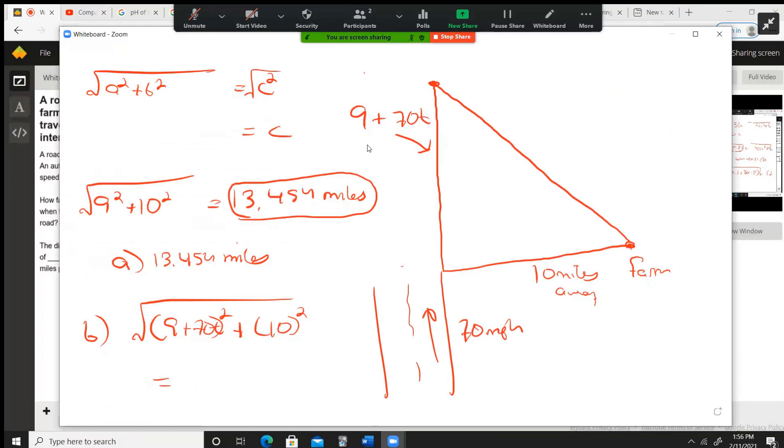I worked this out earlier and the final answer is going to be 4900t squared plus 1260t plus 181. It increases at a rate, so this is the rate at which it increases.